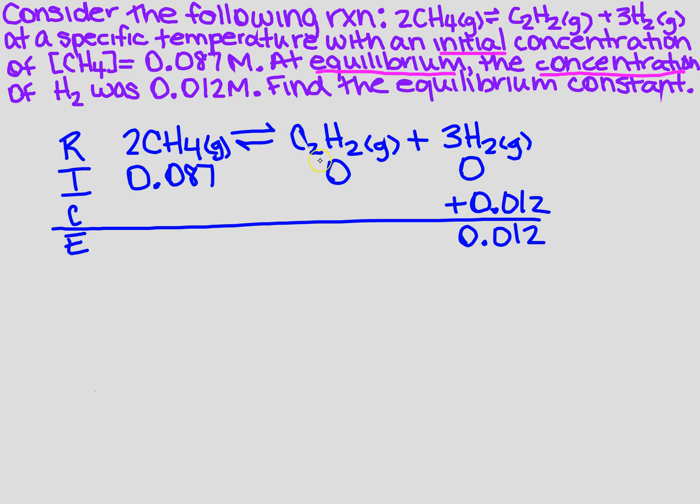Now, what about for the C2H2? Well, if this is 0.012, I have 3 moles of it, so if I divide by 3, it's going to tell me how much each mole changed. And so each mole changed by 0.004, so that's plus. So I'm going to go ahead and add that down here.